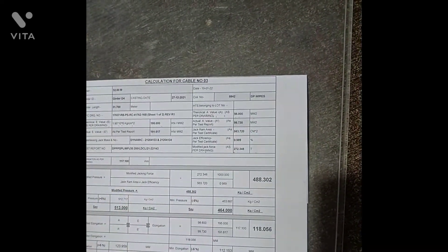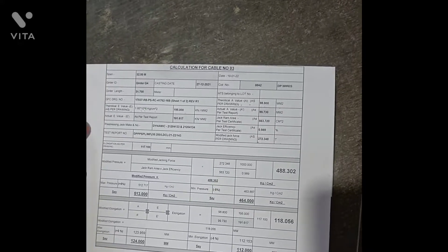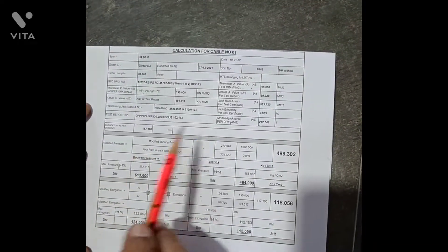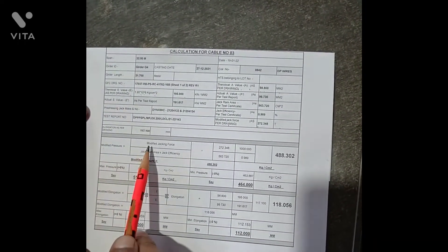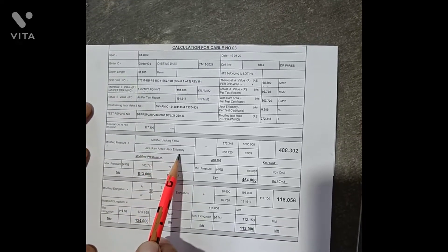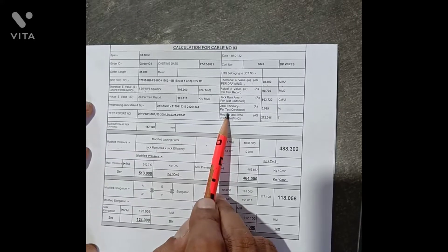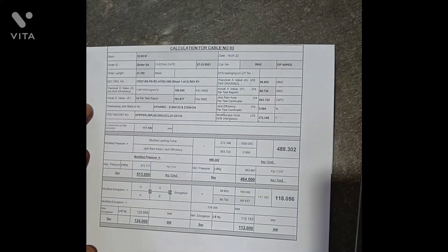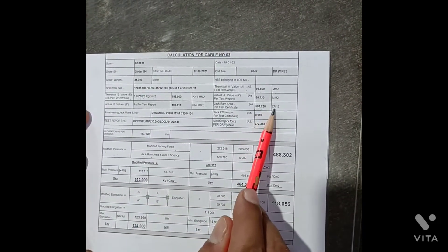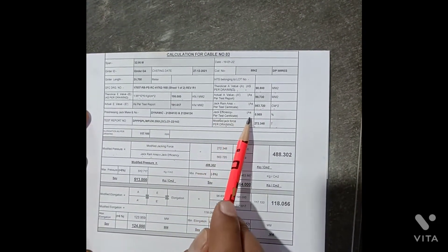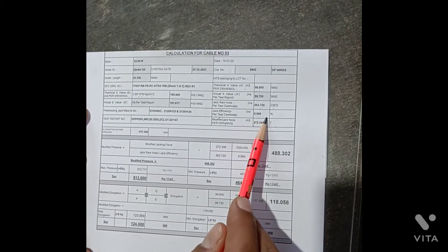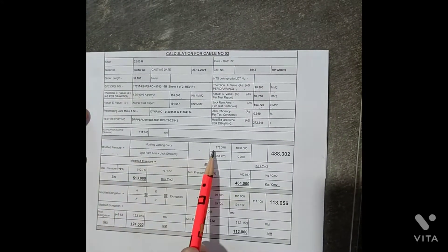Now we have the modified pressure. Because our cable jack is calibrated, we put the pressure in kg per cm². The formula is jacking force divided by jack area multiplied by jack efficiency. The jack area and jack efficiency come from the calibration certificates. The jack area is 563.720 cm² and the jack efficiency is 98.9%, which we use as 0.989.